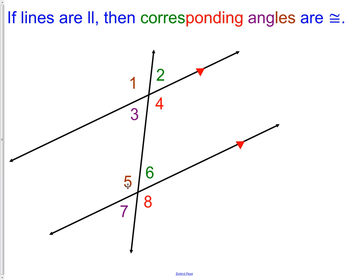So angle 1 and angle 5 are congruent. Angle 2 and angle 6 are congruent. Angle 3 and angle 7, and angle 4 and angle 8. It's the same corresponding angles we learned in the previous lesson, but now we know that they are congruent because the lines were parallel.